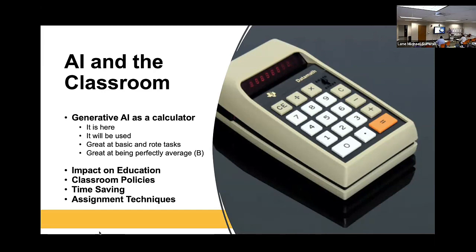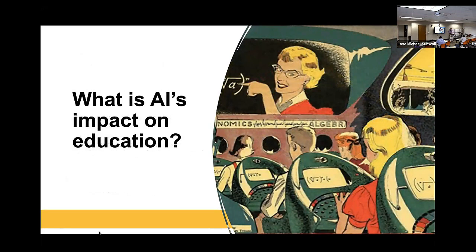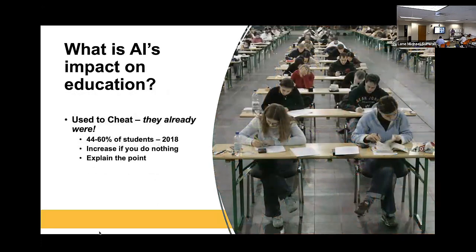What is AI's impact on education? Our students are going to use it to cheat — that's a shock. But students have been cheating before AI, before November or January of last year. Recent studies show that between 44 and 60 percent of students were regularly cheating on their work — they admitted to it. One thing that's important, just as with the calculator in the 1970s: if you just go on doing nothing, treating your classes as if nothing happened since 2022, the number of students who are going to cheat are going to go up. So it's important to get in front of it and be proactive.